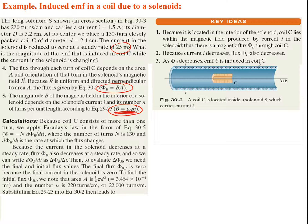Because coil C has multiple turns, we apply Faraday's Law as EMF = N · dΦ/dt, where N = 130 turns. Because the solenoid current decreases at a steady rate, the flux also decreases at a steady rate, so we write the derivative as ΔΦ/Δt. We need the final and initial flux values — the final flux is zero because the final solenoid current is zero. The area is A = (1/4)πd².